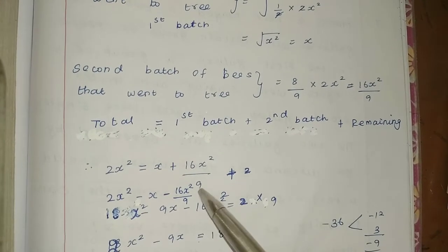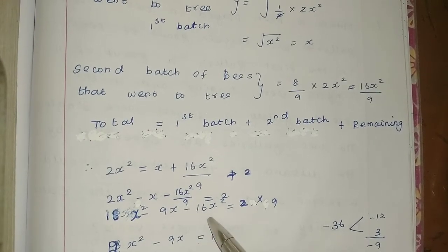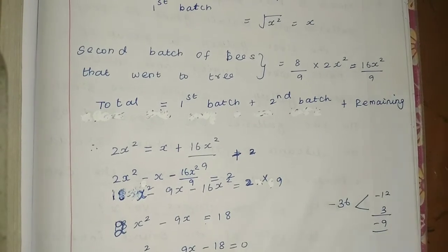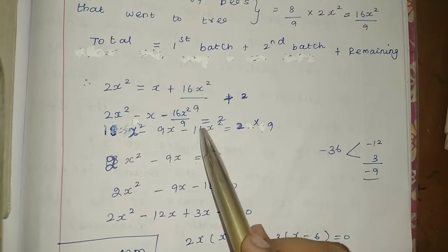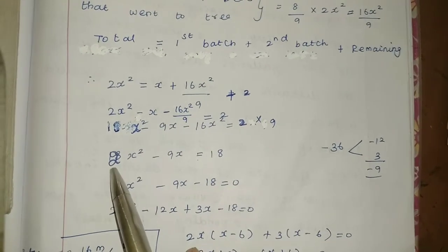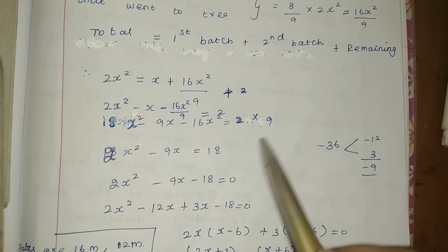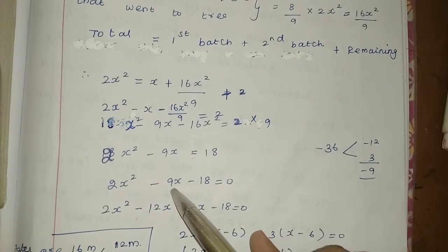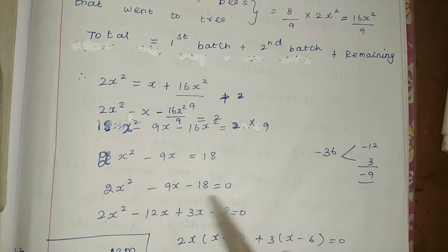Taking LCM of 9: multiply through by 9. We get 18x² − 9x − 16x² − 18 = 0. Simplifying the difference: 18x² − 16x² = 2x². So we have 2x² − 9x − 18 = 0.